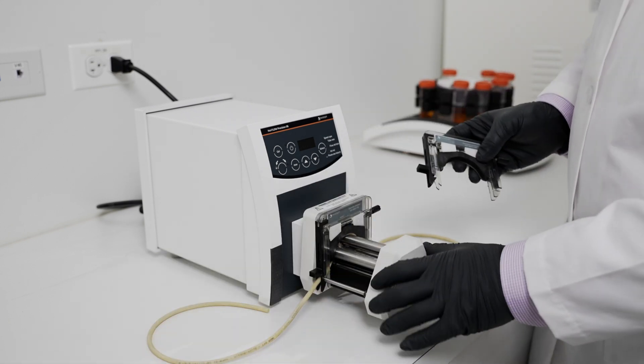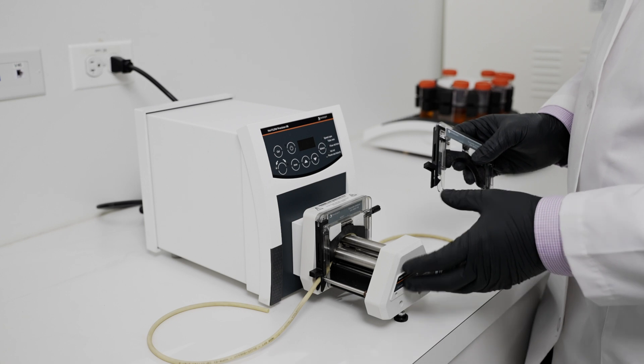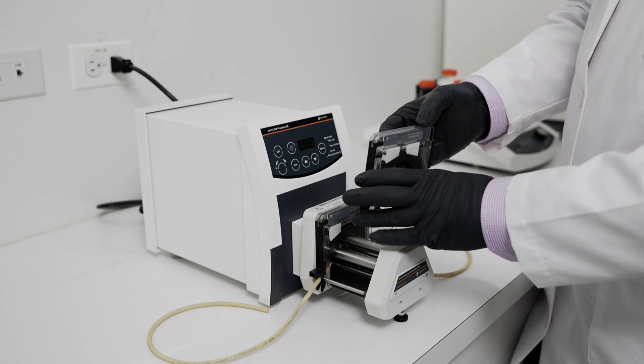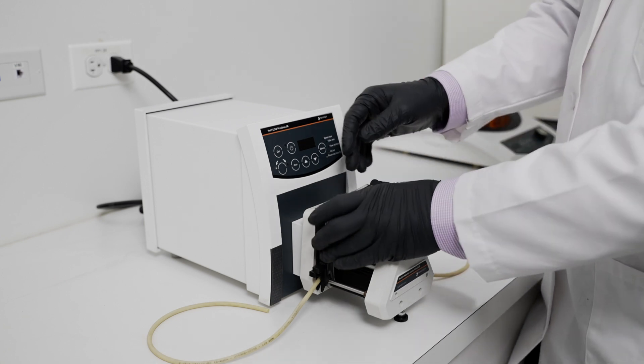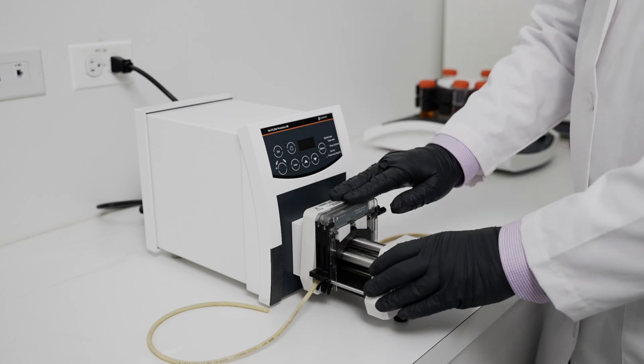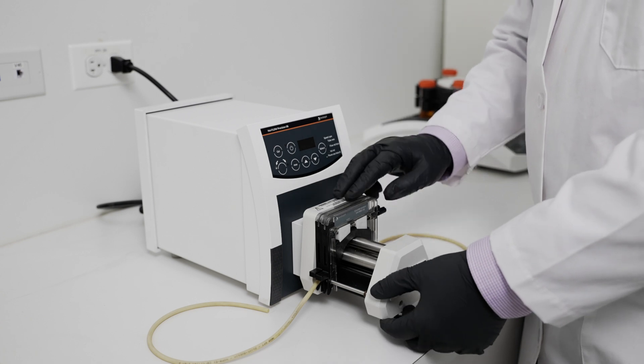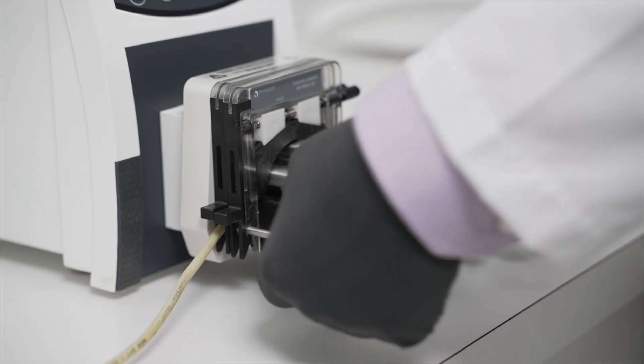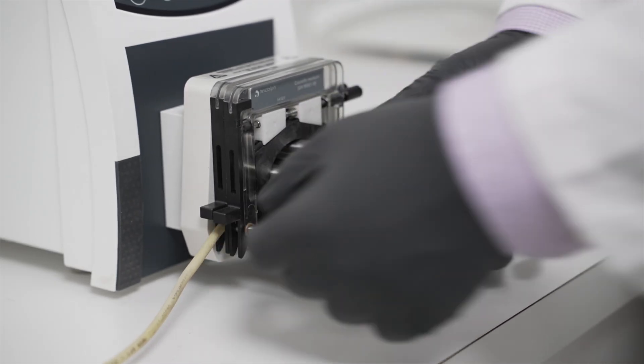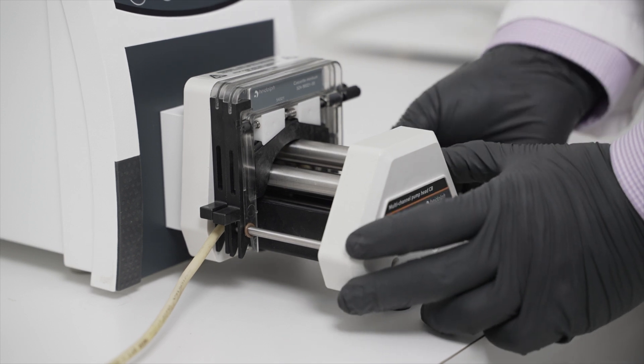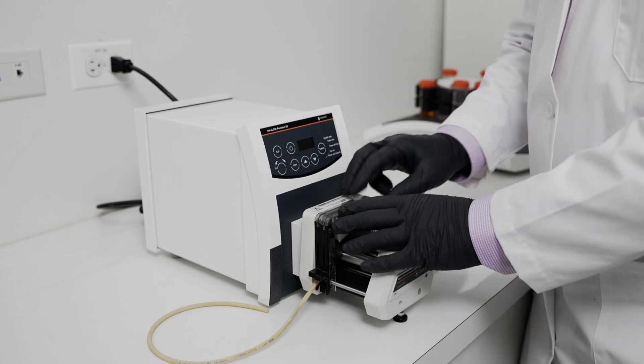This cassette pump head that we're using is the C8, so it fits eight medium-sized cassettes, but you can operate it anywhere from one cassette to eight. If you're using less than the full eight, you can slide these rings up that will lock the cassettes in place so you don't get any movement during rotation.